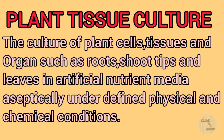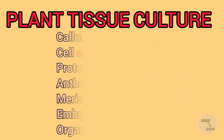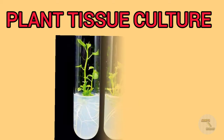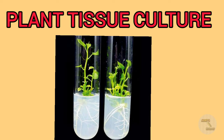This tissue culture is commonly used as a broad term to describe all types of plant cultures, namely callous culture, cell culture, protoplast culture, anther culture, meristem culture, embryo culture, and organ culture.